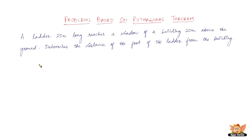In this video let us solve problems based on Pythagoras theorem. The question reads: a ladder 25 meters long reaches a window of a building 20 meters above the ground. Determine the distance of the foot of the ladder from the building. Let us try to make this question into a diagram.